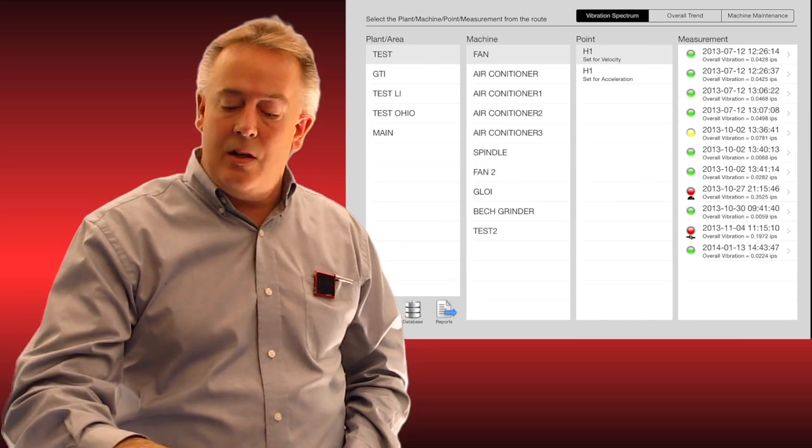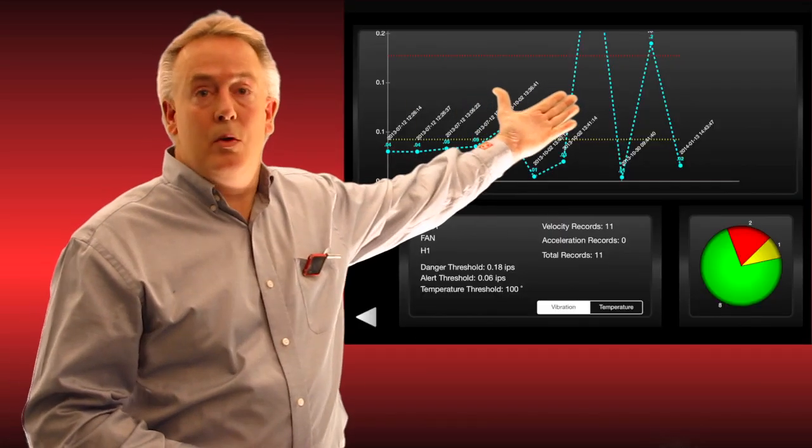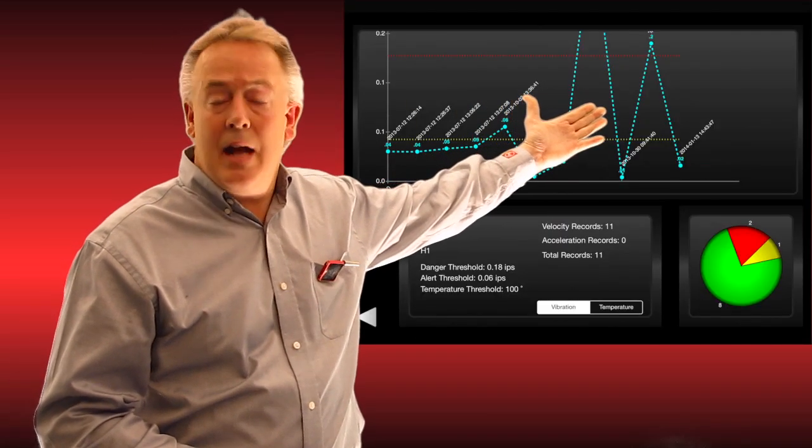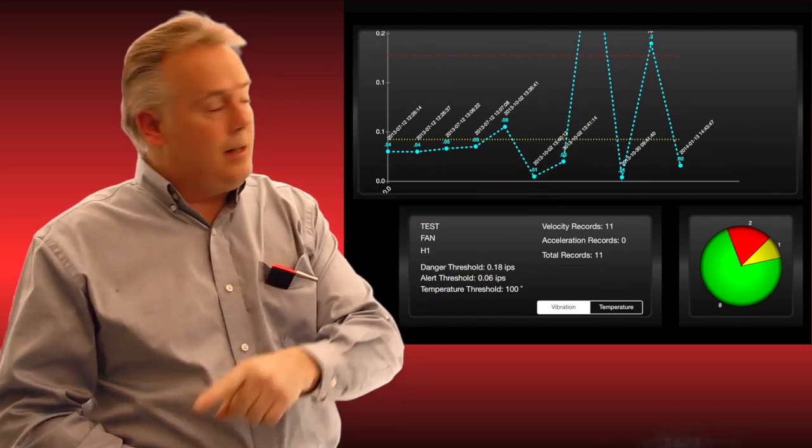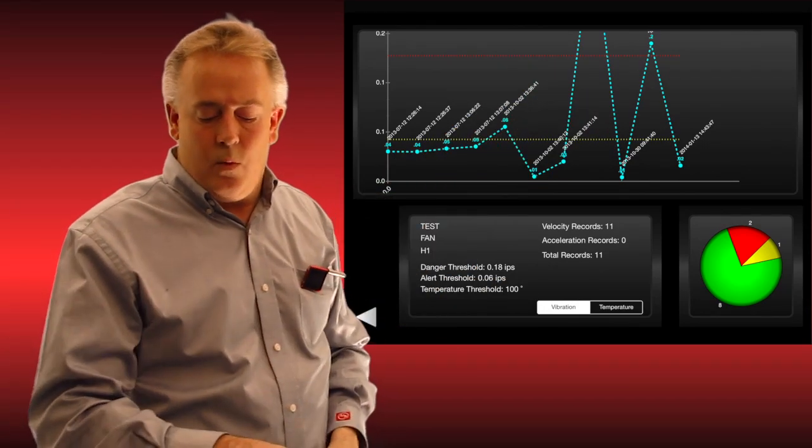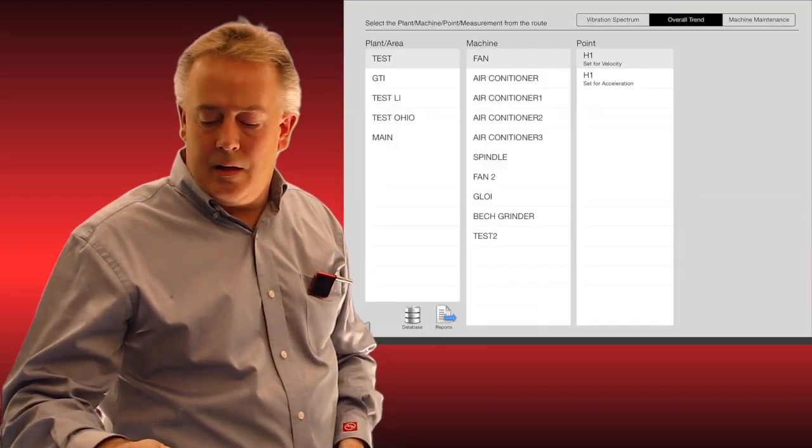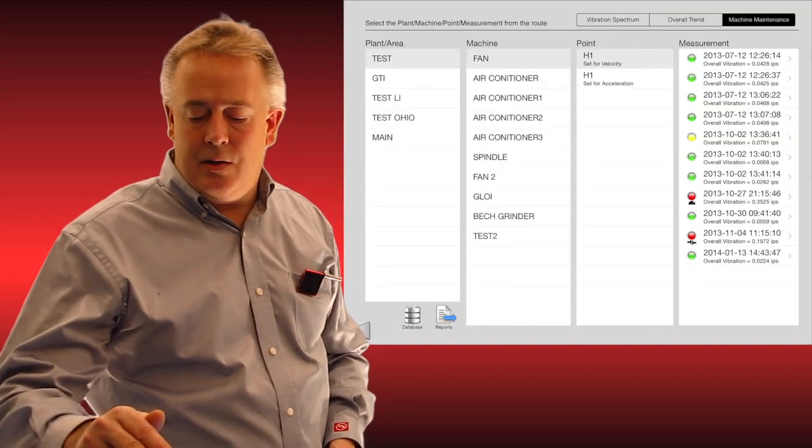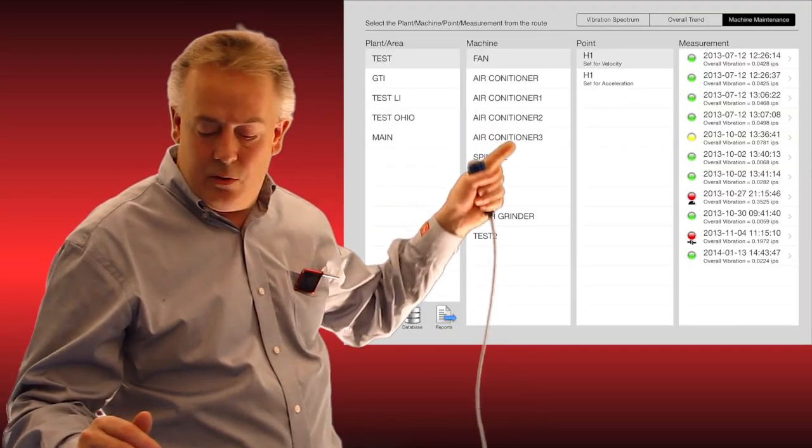All those points are in either green, yellow, or red, telling me by those alert thresholds where I stand at that particular asset point. If I hit the overall trend, you can see we have a beautiful trend of that data point. We can see all the dates along the way that we've taken those measurement points. We can scroll back, click on machine maintenance.